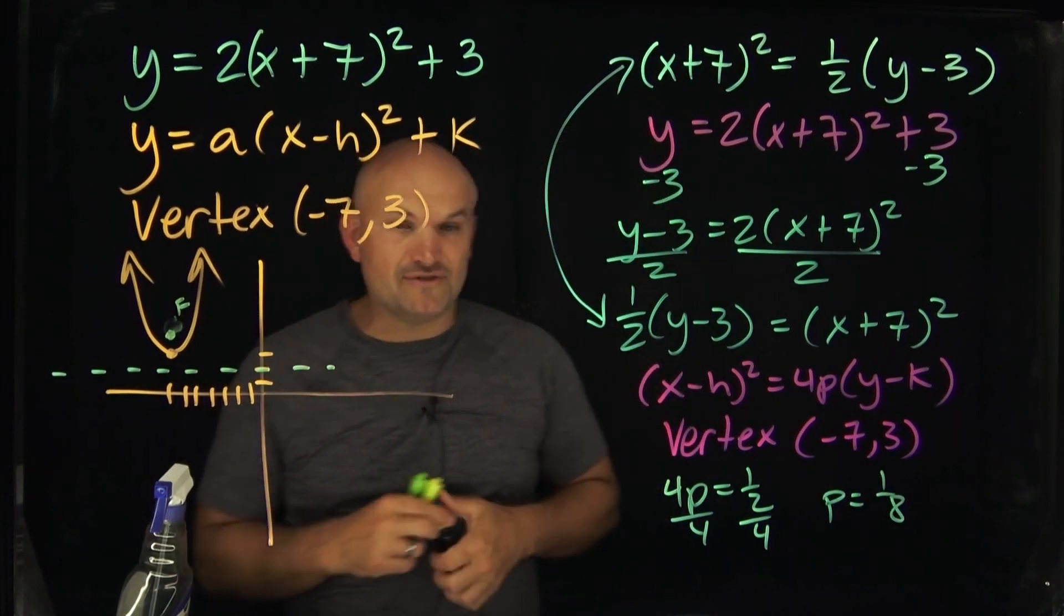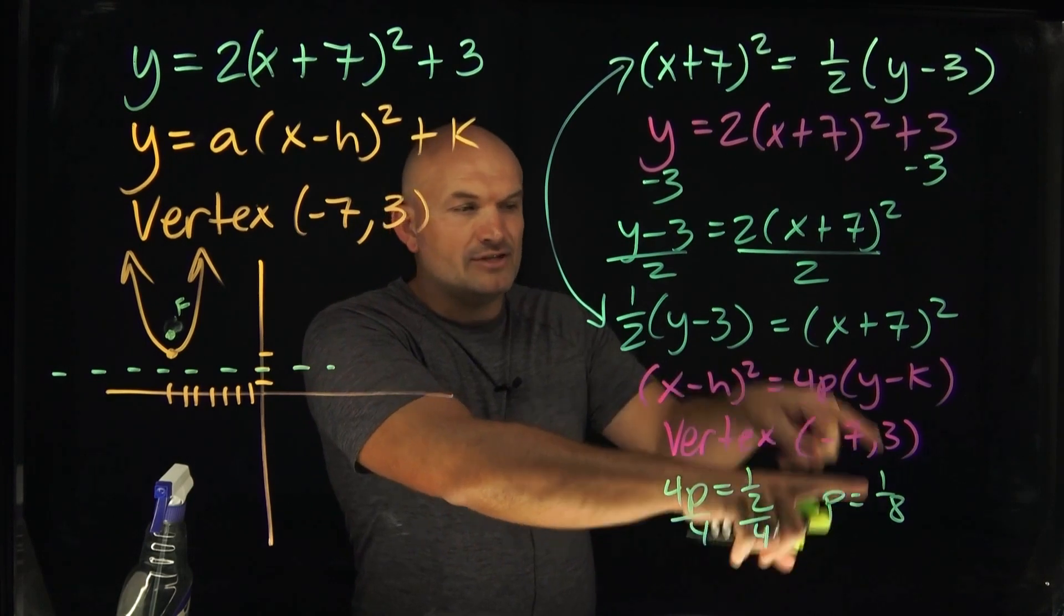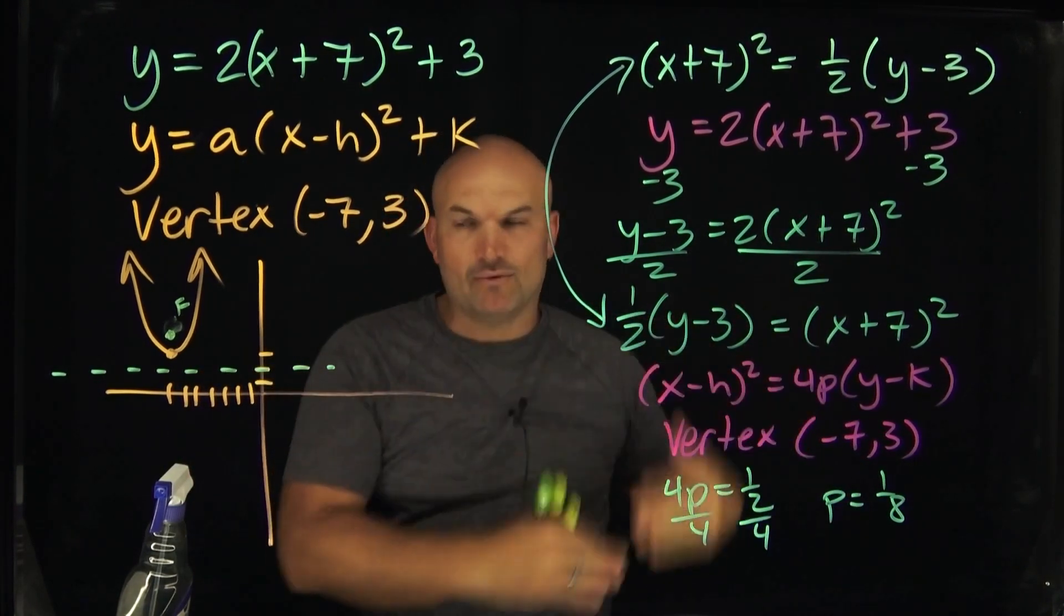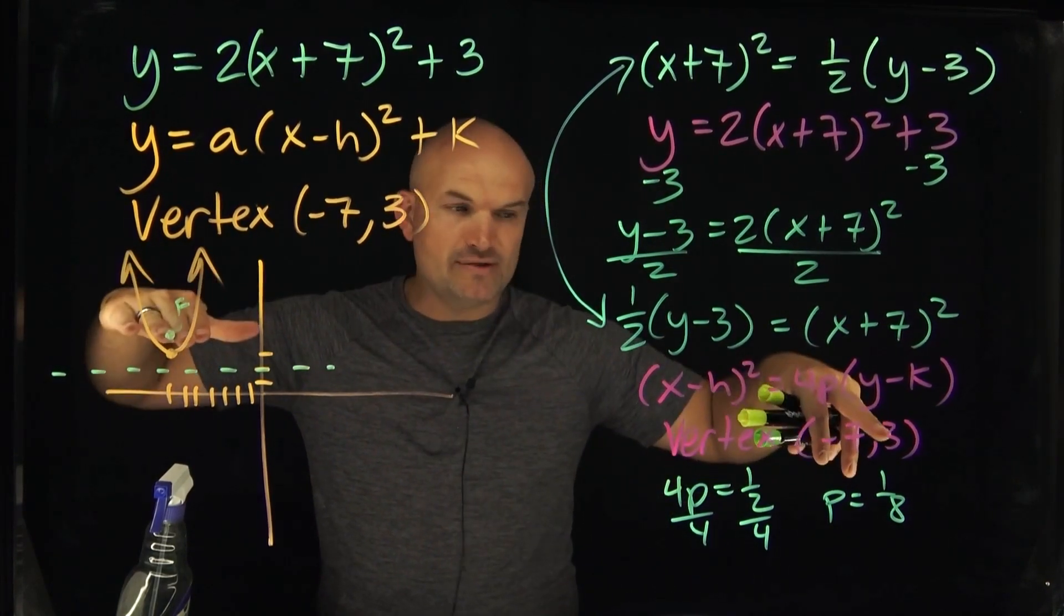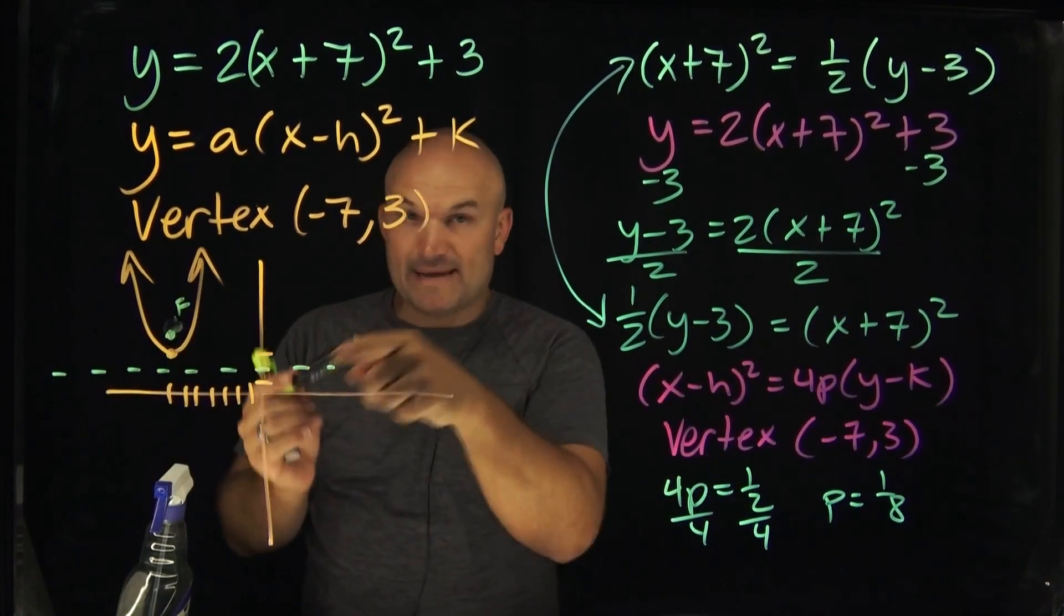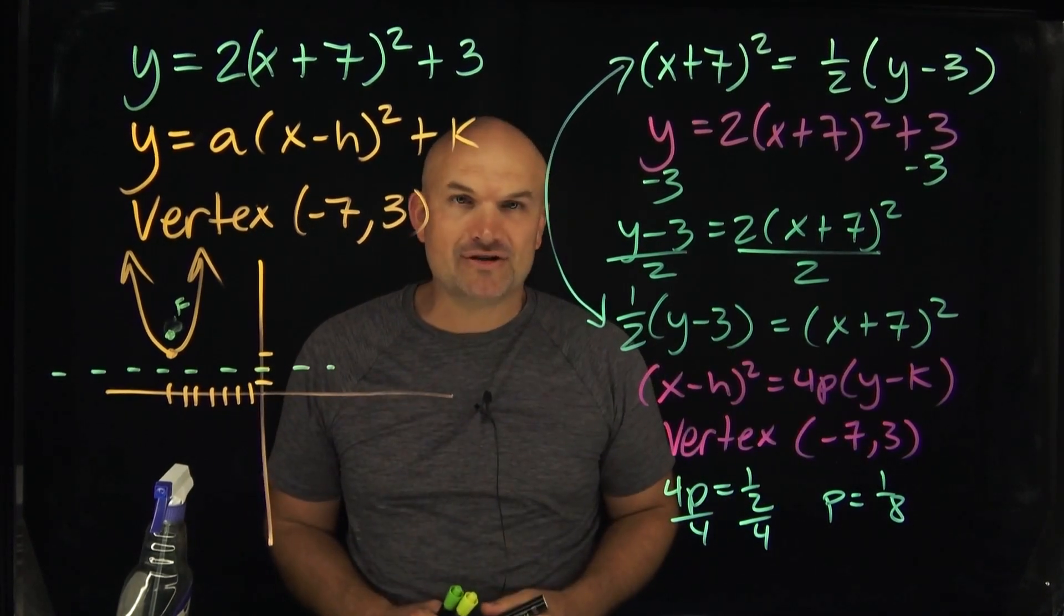So, therefore, if I want to find my focus, all I'm simply going to do is add 1 eighth to the 3. And if I want to find my directrix, I would subtract the 1 eighth from the 3. You can see it's going up, so you add it to your y coordinate 3. Or you would subtract it, which is going to be y minus 3 minus 1 eighth. And, therefore, then you can find your directrix.